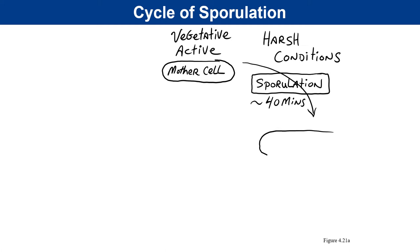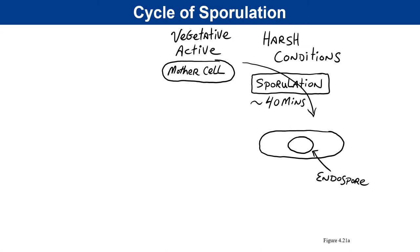The completed endospore structure may be round or oval, and can be centrally located, terminally located toward one end, or subterminal. The location and shape of the endospore allows lab technicians and pathologists to identify which species of Bacillus or Clostridium might be present in a clinical sample or responsible for a disease process.